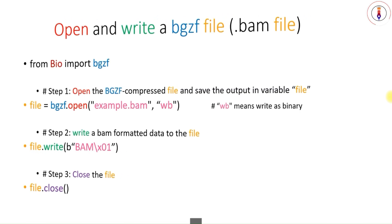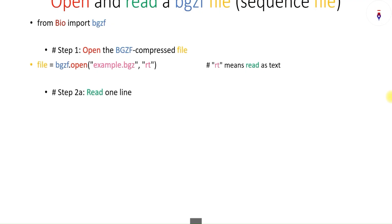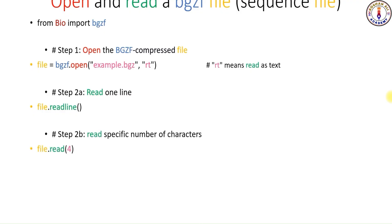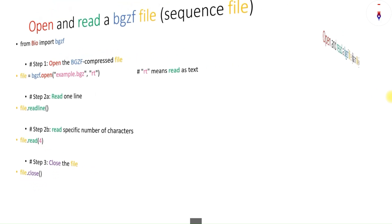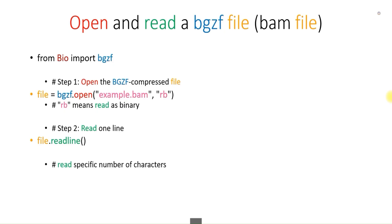Now let's read the files we just wrote. First, let's read the sequence file. Import the bgzf module. Use the open command to open the file example.bgz with mode rt, which means read as text. If you want to read a single line at a time, use the readline method. However, if you want to specify the length to read manually, use the read method — 4 for example is the length of content you want to read; the larger the value, the longer the portion read. At the end, close the file. To read the .bam file, the method is the same except the file name has a .bam extension and the mode is rb, which means read as binary. To read one line use readline; to read multiple lines by specifying length, use the read method. At the end, close the file.